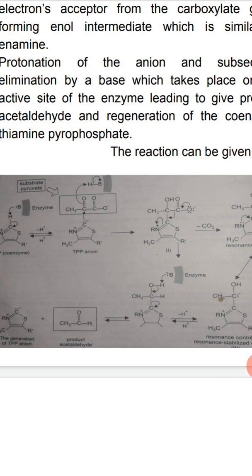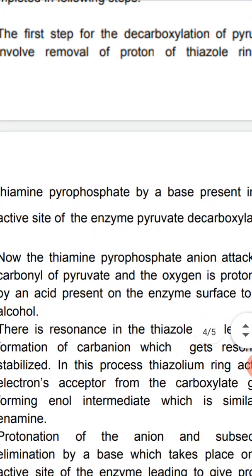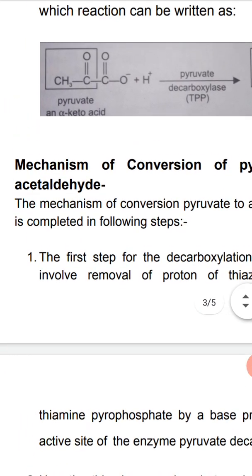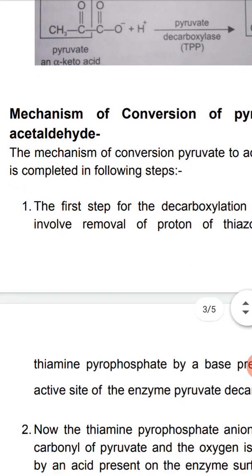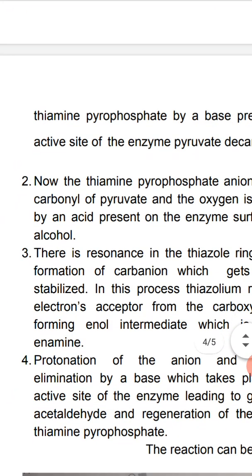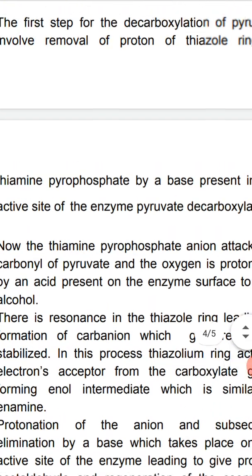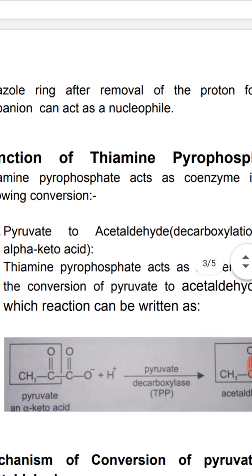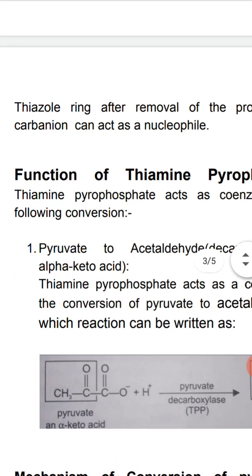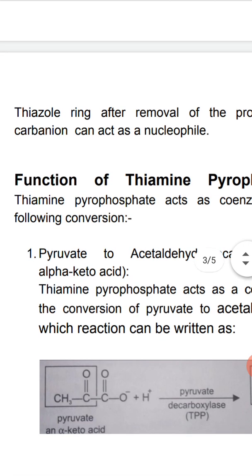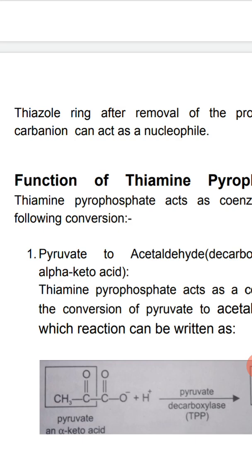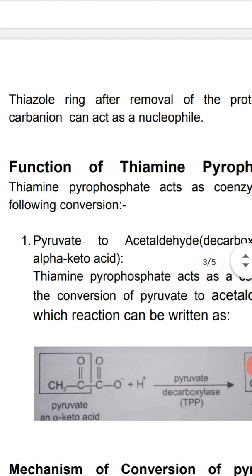We see how a pyruvate ion is converted into acetaldehyde through a decarboxylation process. The function of thiamine pyrophosphate is decarboxylation, leading to the formation of acetaldehyde from the alpha-keto acid, that is the pyruvate ion. We have discussed in detail how thiamine pyrophosphate acts as a coenzyme in the conversion of pyruvate to acetaldehyde, which is the process of decarboxylation.